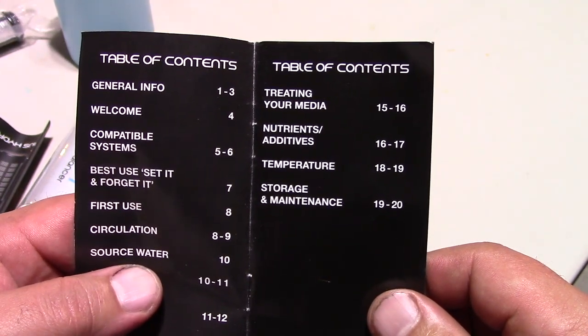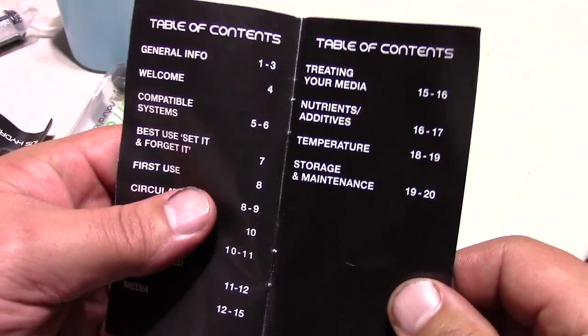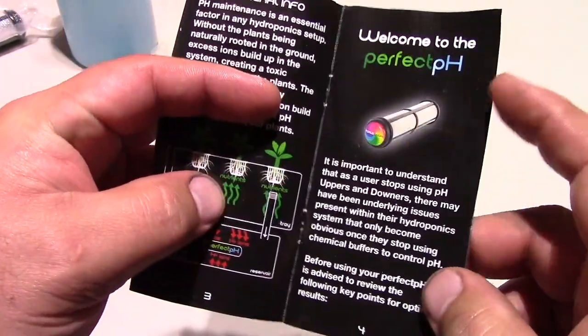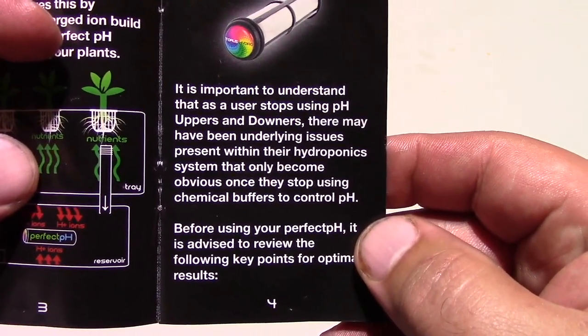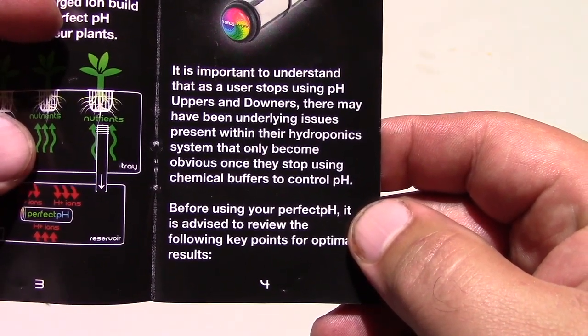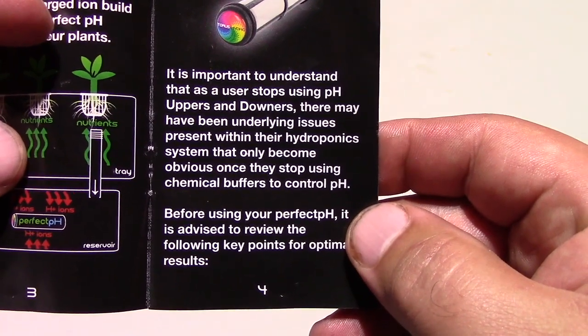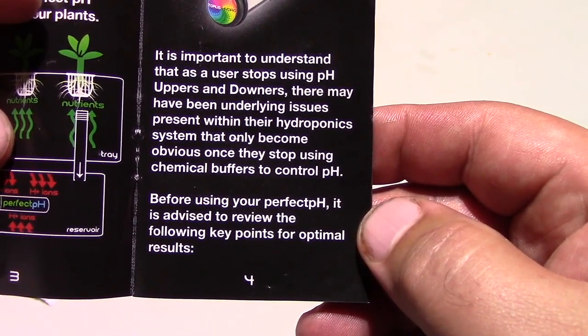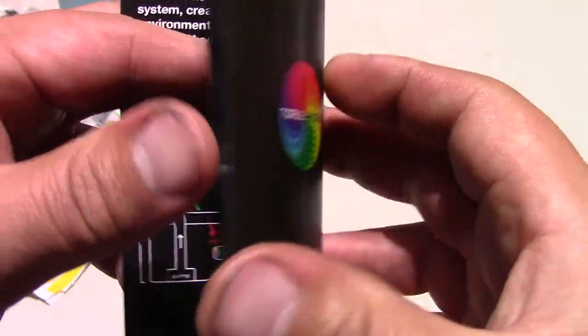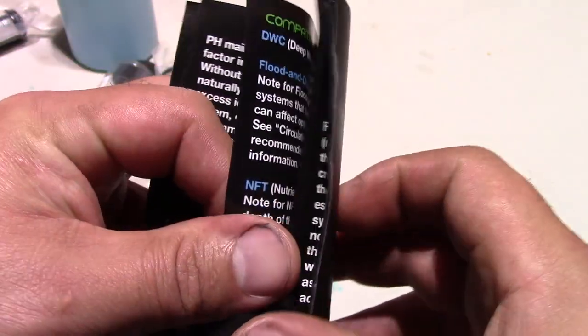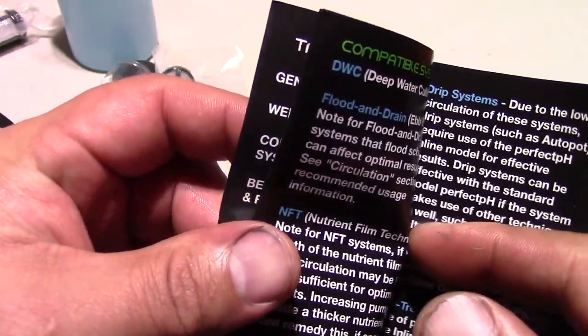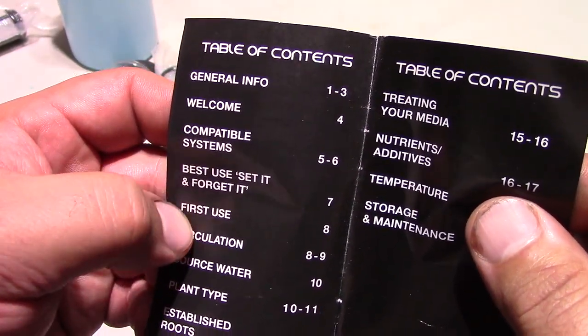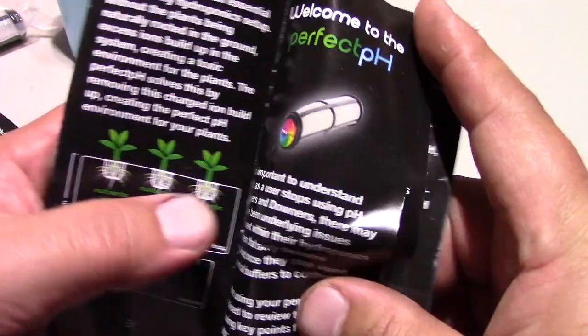Alright ladies and gentlemen, I am back. So I have gone through this whole bible from start to finish. A few things that I don't really like about it, but regardless, general info kind of gives you. And then this is what this says here: it's important to understand that the user stops using pH uppers and downers, there may have been underlying issues persistent with the hydroponic system that only become obvious once they stop using chemical buffers to control pH. Before using your pH Perfect, it is advised to review the following key points for optimal results. This is on page 4. And then what are the next key points? I wonder the same thing, because when I get over here it's compatible systems. So is it compatible systems? So let's go back to the table of contents. These next key points, so is it all these things? I guess so. Not real clear.